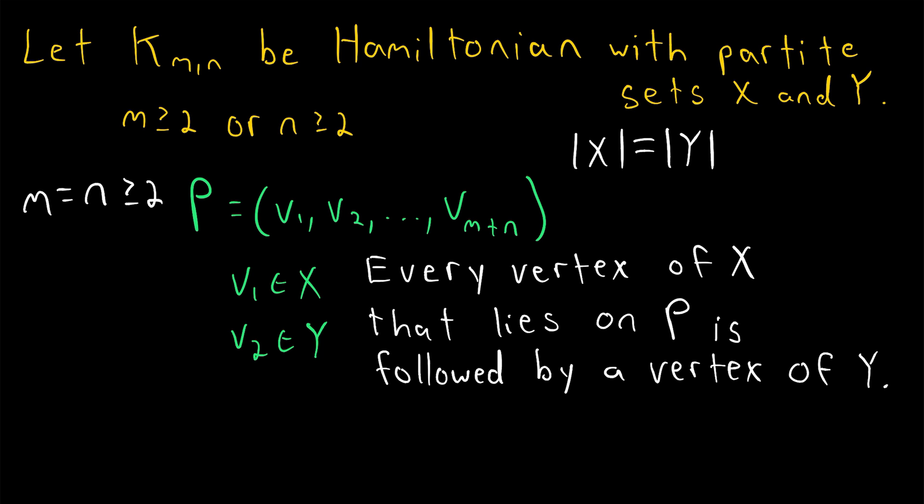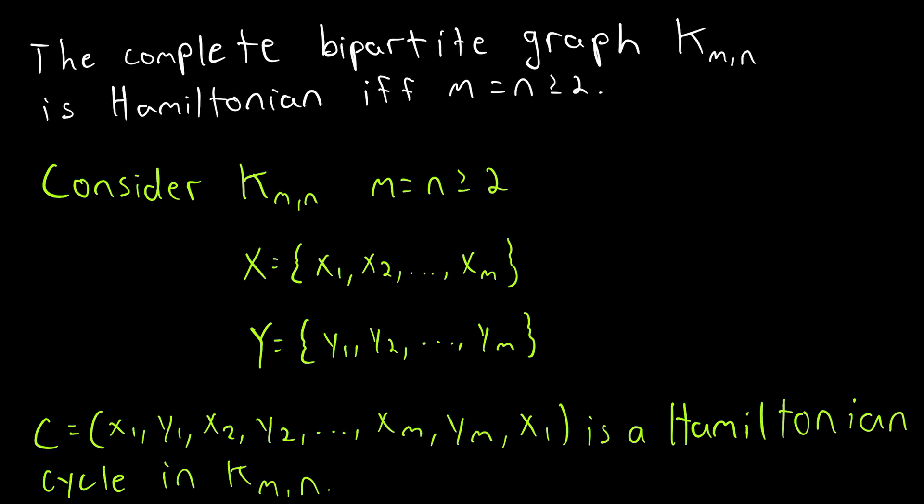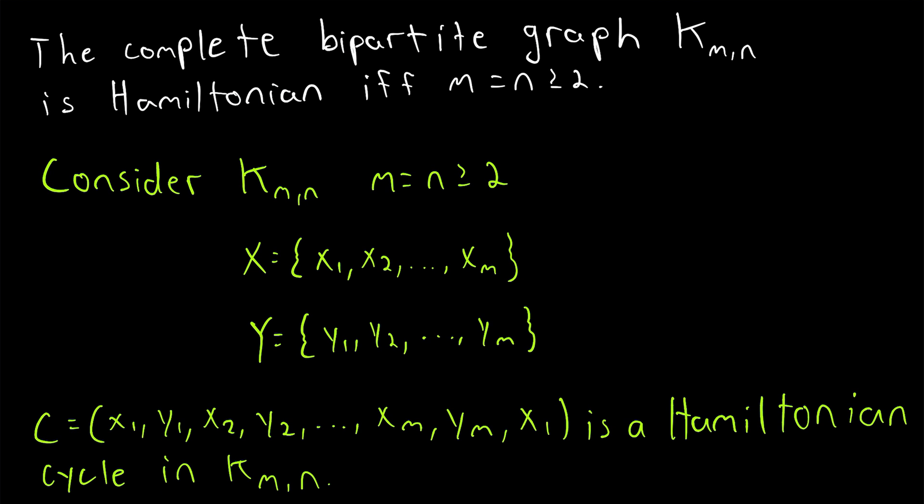If I were trying to be super formal and rigorous about it, I might define a bijection from the partite set X to the partite set Y. But if that's what you want to do, it's pretty easy to do so using this argument to figure out what the bijection would have to be. In any event, I hope this video helped you understand this wonderful theorem that the complete bipartite graph K_m,n is Hamiltonian if and only if both of its partite sets have the same number of vertices, at least two in each.